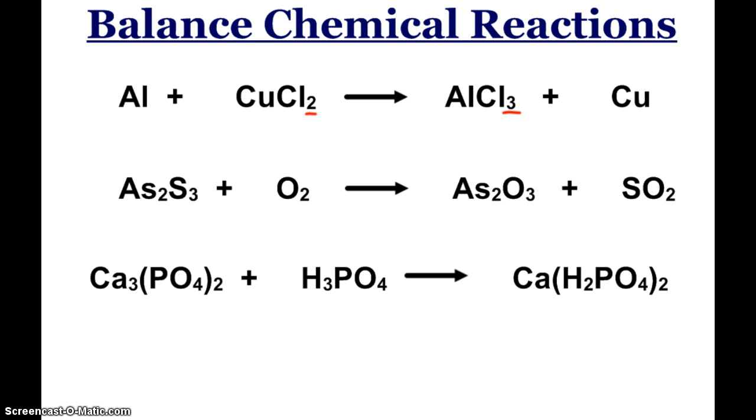What's the least common multiple between 2 and 3? It would be 6. So if I make 6 chlorines on both sides, now I just have to fix my aluminum and my copper, and this reaction is balanced.